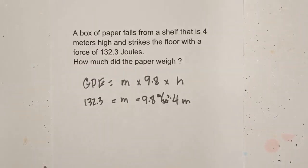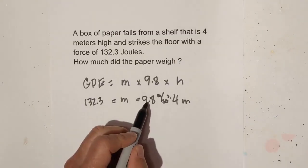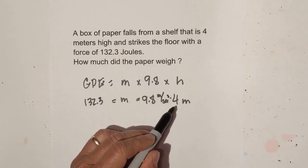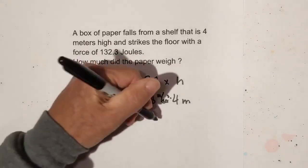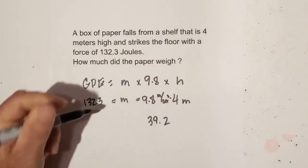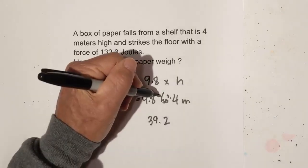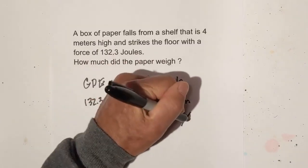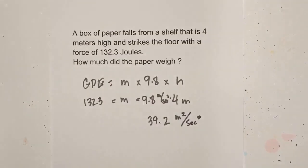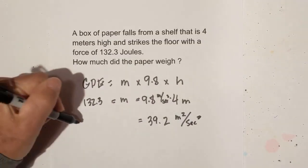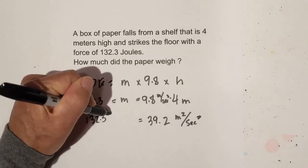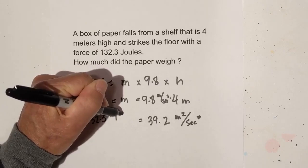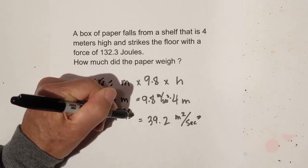Now all we do is start solving. I'll add the units to this in just a moment. When you take 9.8 times 4, I've already done that, that equals 39.2. Let's remember our units. We can combine meters together, so we have meters squared over seconds squared. Now, let's take 132.3, and that's kilograms times meters squared per second squared.